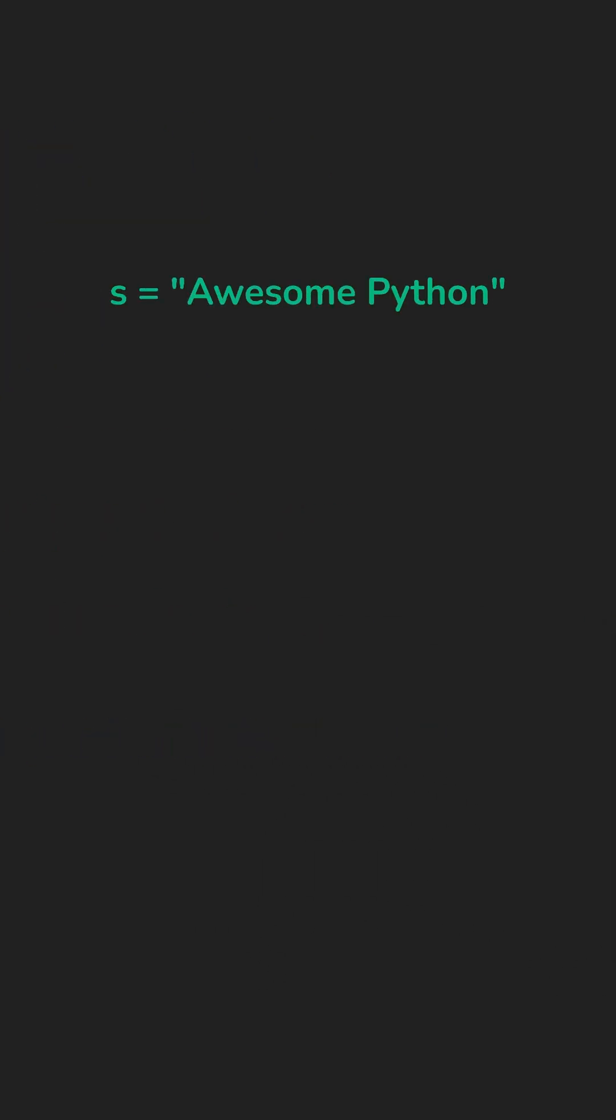You can access elements with indexing. s[j] gives the element at position j, and Python even supports negative indexing, so s[-1] means give me the last element.